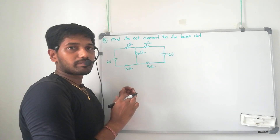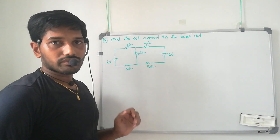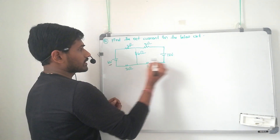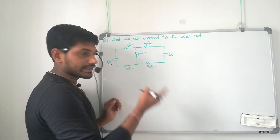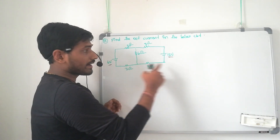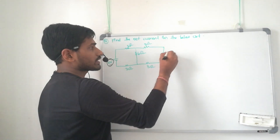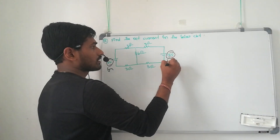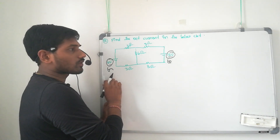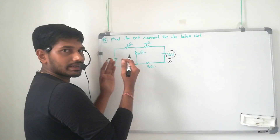Here, two sources are given. Find the net current in the below circuit. There is a 6 volt source here and a 12 volt source here — two resistors connected to the same circuit. Two batteries, two sources — for example, here one generator source and here another generator source — two sources attached to one common circuit.